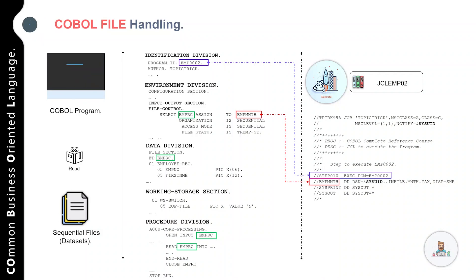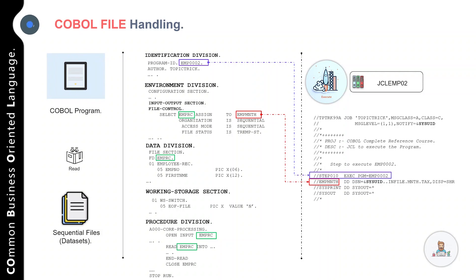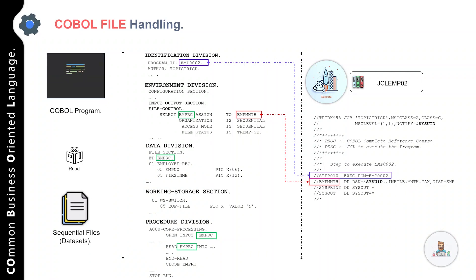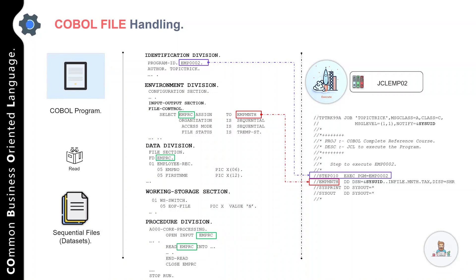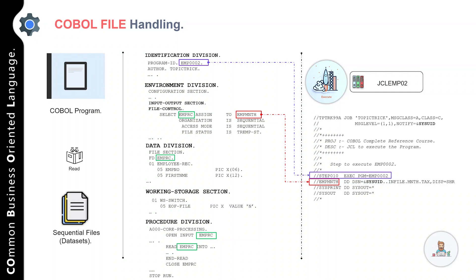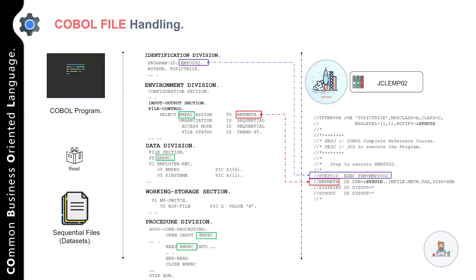Now the question is: you've created and compiled your program — how do you execute it on the mainframe? For that you need a JCL. JCL stands for Job Control Language and it is a command language of the OS operating system. It is generally used to specify the program and the corresponding files or output data sets where your output will be stored.